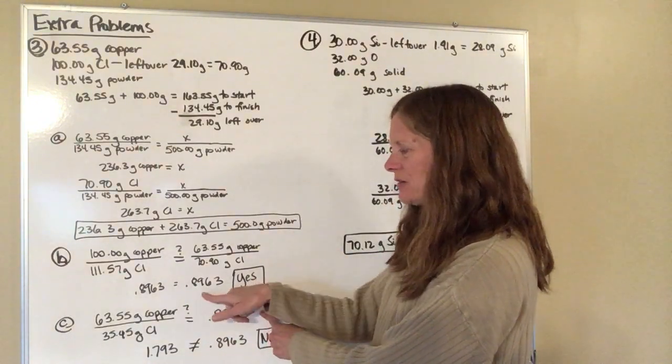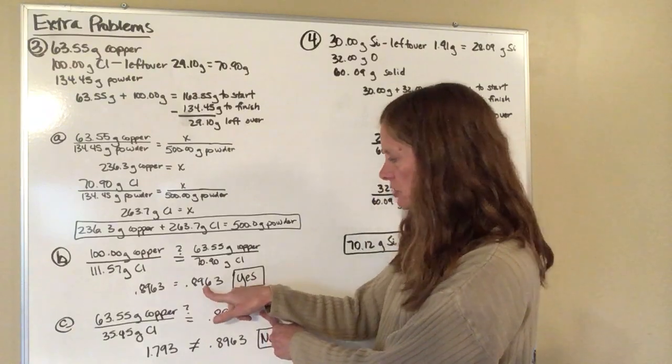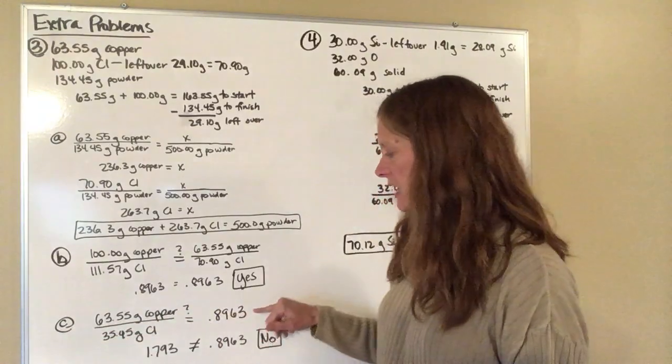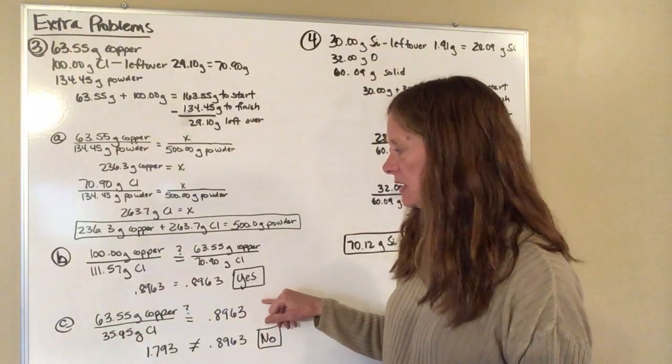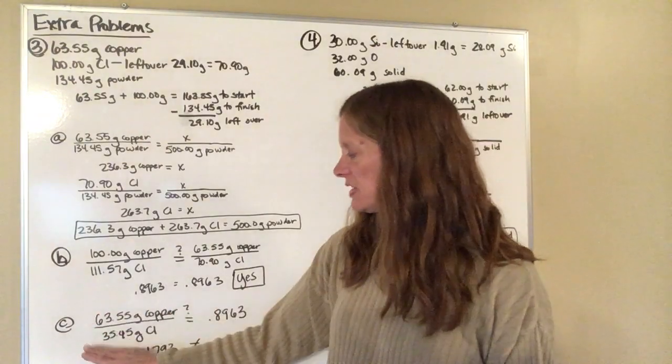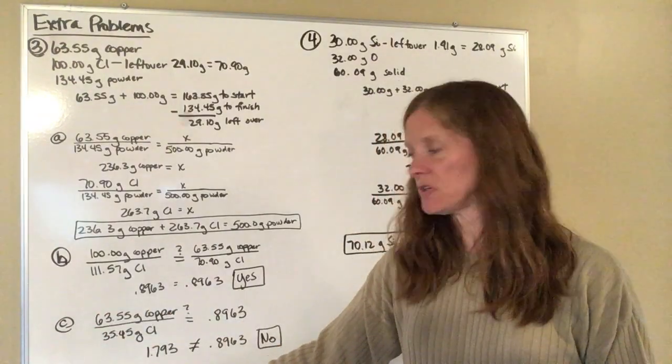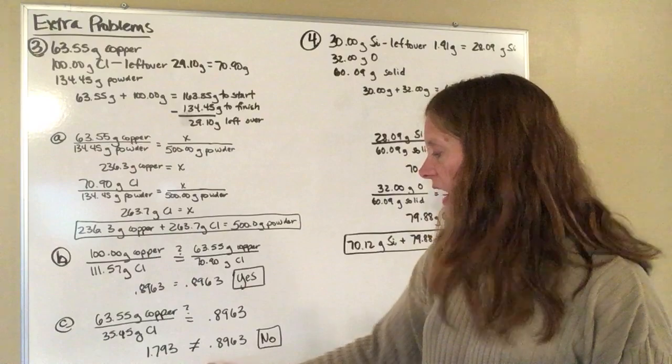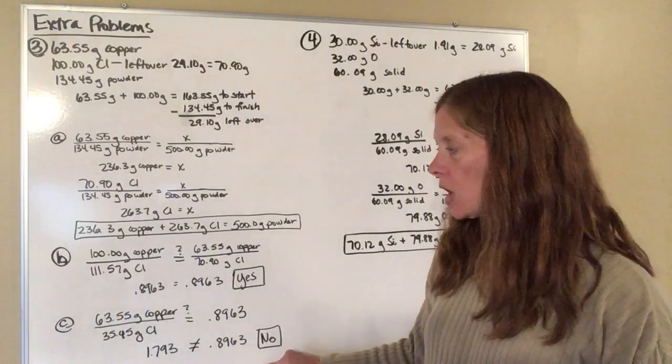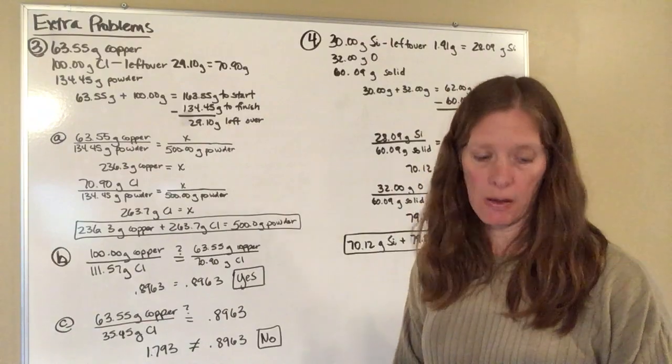So I'm just going to write this number down here. And then my question is, is this ratio the same as 0.8963? Again, just because I'd already calculated it in part B. So when I divide this out, this time I get 1.793. And that is not the same as 0.8963. So in this particular case, no, they are not the same powder.